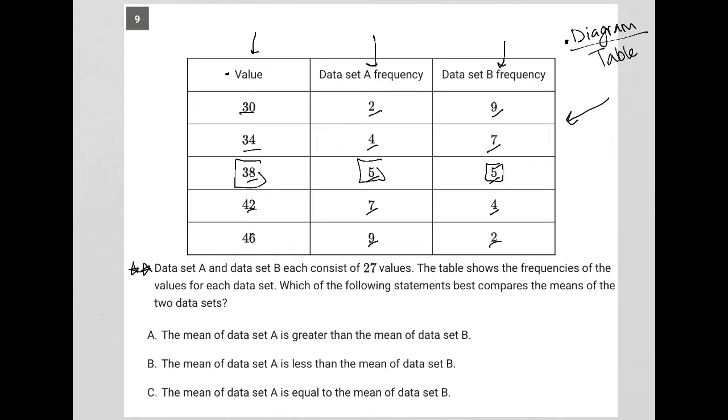Now the question says data set A and data set B each consists of 27 values. The table shows the frequencies of the values for each data set. Which of the following statements best compares the means of the two data sets? Well, if I want to compare the means, I want to just calculate the means.